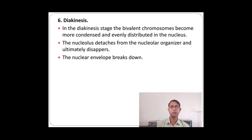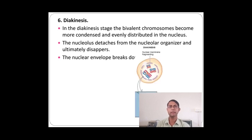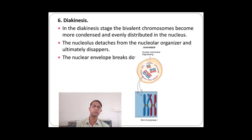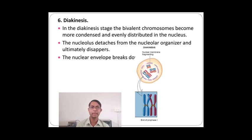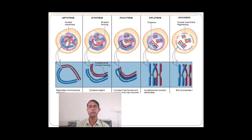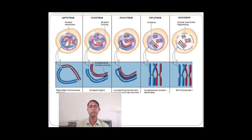The last phase of prophase 1 is diakinesis. In the diakinesis stage, the bivalent chromosomes become more condensed and evenly distributed in the nucleus. The nucleolus detaches from the nuclear organizer and ultimately disappears, and the nuclear envelope breaks down. In this diagram you can see the nuclear membrane being eliminated from the cell. The chromosomes become very thick and this marks the end of prophase 1. To summarize prophase 1: the phases are leptotene, zygotene, pachytene, diplotene, and diakinesis.